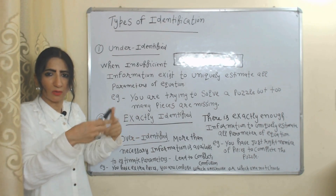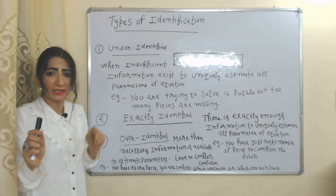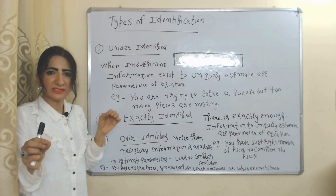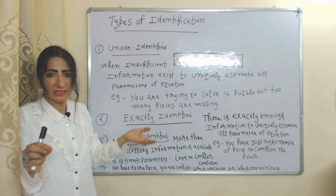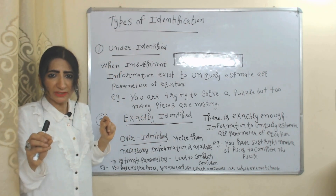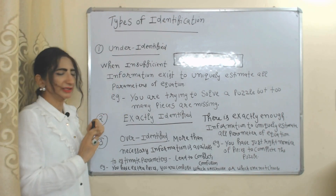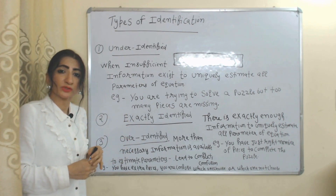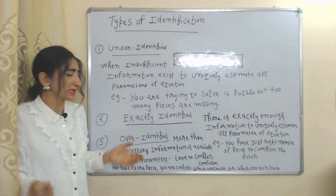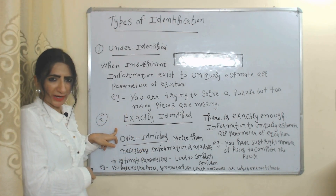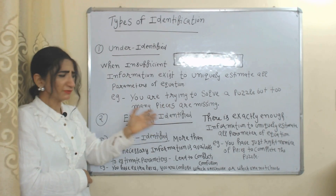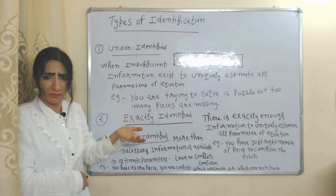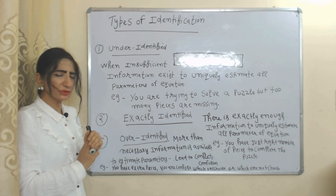Now we will see the types of identification. Under-identified: when we have insufficient information to uniquely estimate all parameters of the model, it will be called under-identified. For example, you are trying to solve a puzzle but so many pieces are missing.